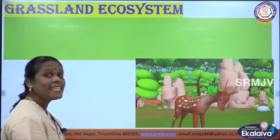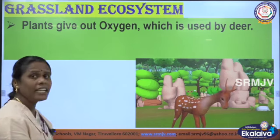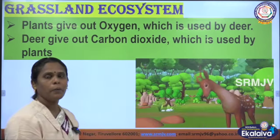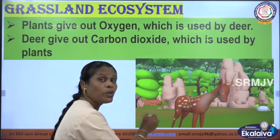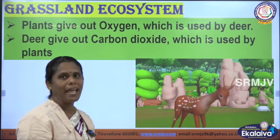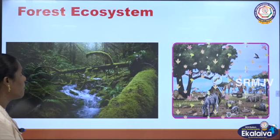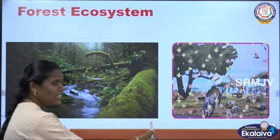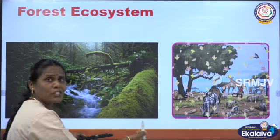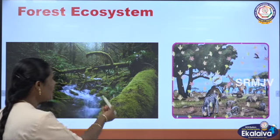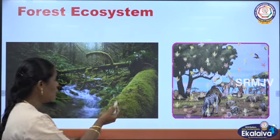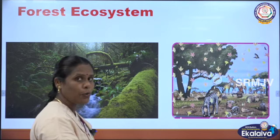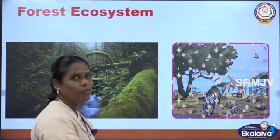Next is grassland ecosystem. In the grassland ecosystem, plants give out oxygen which is used by deer, and deer give out carbon dioxide which is used by plants. Then, in the forest ecosystem, different kinds of animals are the living organisms, while water, temperature, and weather conditions are the non-living components. Trees are also living organisms. In the forest ecosystem, animals interact with non-living organisms.